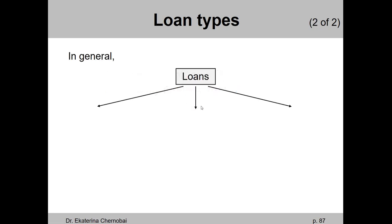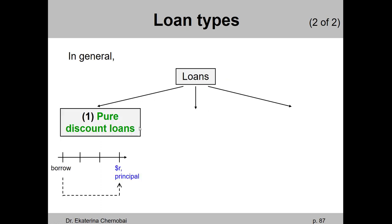In general, we can classify loans into three different types. First, pure discount loans. This means that you borrow some amount of money today and after a while — maybe after a year — you pay it back. You pay the principal that you borrowed back to the lender with some interest on top of it, at some interest rate. There's nothing going on between the time you borrow and the time when you pay the money back. That's pure discount loans.